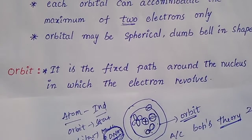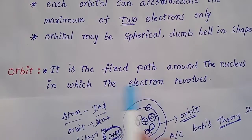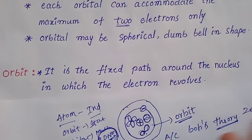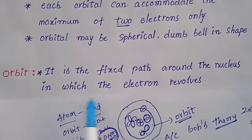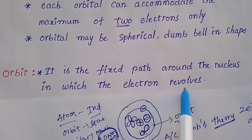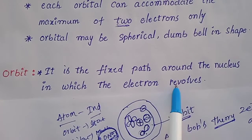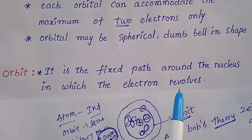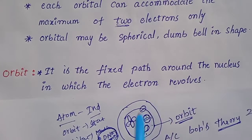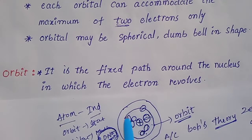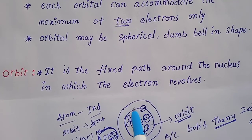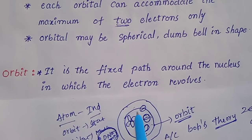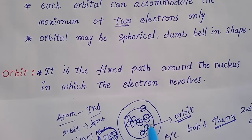Orbits are nothing but fixed paths around the nucleus in which the electron revolves, according to Bohr. These are fixed paths according to Bohr's model.